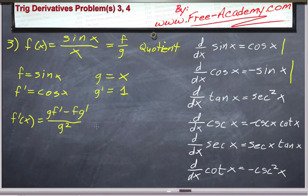We have all the different elements there, so it's just a matter of plugging them into our formula to get the answer. So we have x, which is g, times f prime, which is cosine of x, minus f, which is sine of x, times g prime, which is 1. And this is all divided by g squared, which is x squared.